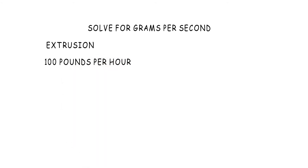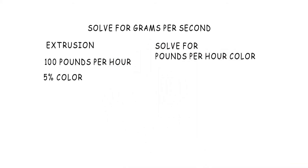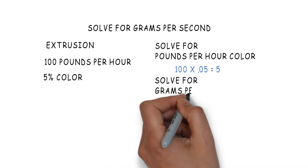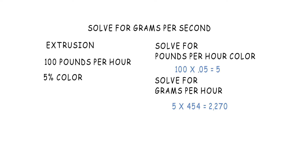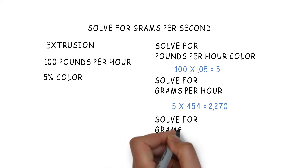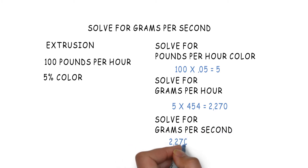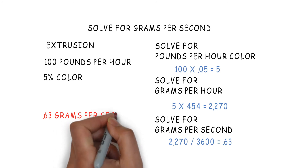Now let's take a look at an extrusion application. Let's assume the extruder is running 100 pounds per hour and we're running 5% color. First, we solve for how many pounds of color per hour: 100 pounds times .05 equals 5 pounds per hour. Then we convert to grams per hour: 5 pounds times .454 equals 2,270 grams per hour — since 454 is the number of grams in a pound. To get grams per second, we divide 2,270 by 3,600 (the number of seconds in an hour) and get .63 grams per second, which we use to size the dosing tool.